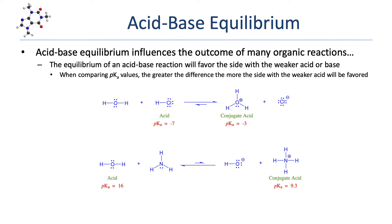We can determine which side of an acid-base reaction is favored at equilibrium by looking at the acids and bases involved. Equilibrium will favor the side with the weaker acid or the weaker base. In the reaction of water with HCl to form hydronium and chloride, the acid on the left is HCl and the conjugate acid is hydronium. Comparing pKa values — hydronium has a pKa of negative 3, HCl has negative 7 — hydronium is the weaker acid, so equilibrium favors the right.